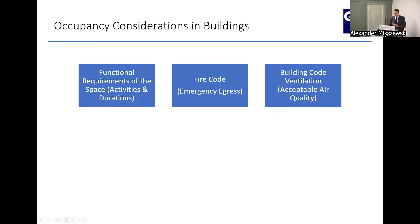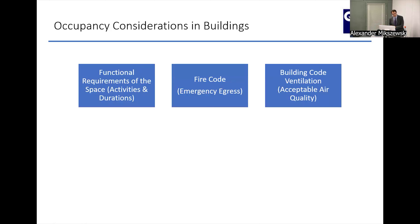We have the requirements of the space — what is this room supposed to be used for, which is exactly what we're doing right now. There are fire considerations. The Triangle Shirtwaist Factory fire in New York City led to standard protection, at least for emergency egress, so we only have so many people in a room because we're supposed to be able to leave through that door within a certain amount of time.